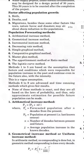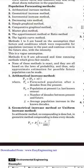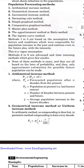Methods one to five are based on the assumption that factors responsible for population increase in the past will continue in the future — this is considered a vague assumption. Methods six to nine are advanced and time-consuming methods that give fair results. None of these methods are exact; they are all based on laws of probability, and only approximate estimations of future population can be made. These methods will be discussed in the next video.